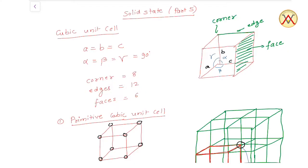Hello students, this is our video on solid state part 5. पिछले वीडियो में अपनने देखा था कि crystal parameters A, B, C and alpha, beta, gamma के basis पर there are 7 types of crystal system exist.